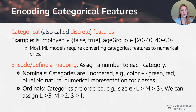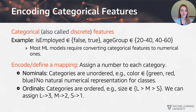Coming back to the main issue — we need to convert all data into a numerical format. This brings us to encoding of categorical features, also called discrete features. Examples include an employment column with true/false values, or age groups in different buckets. Most machine learning models require converting to numerical format first, so we need to encode or define a mapping from these different categories to numerical values.